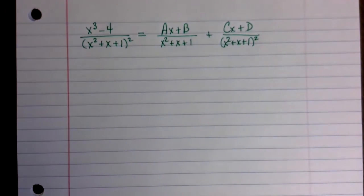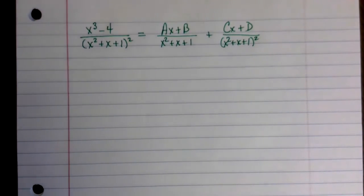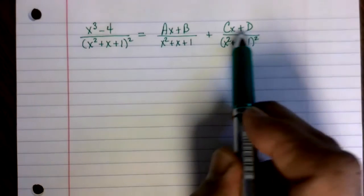It kind of looks like the same thing that we did for linear expressions. If this was a cube, then there would be three terms.